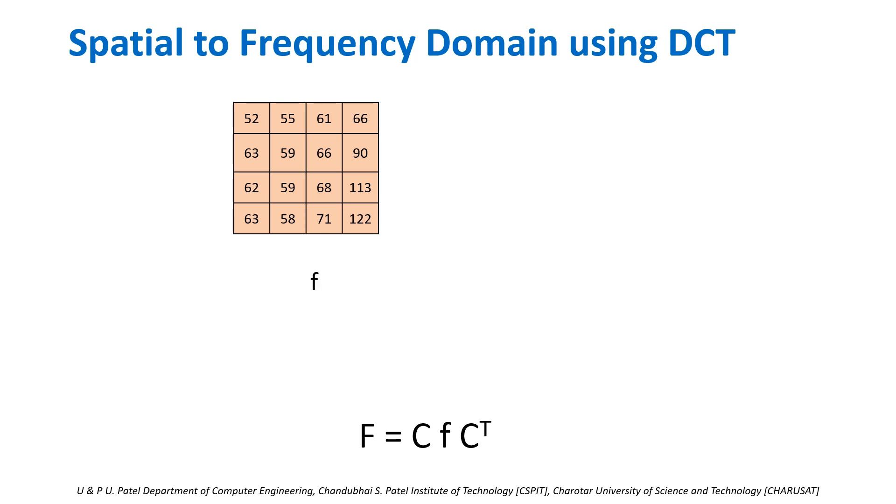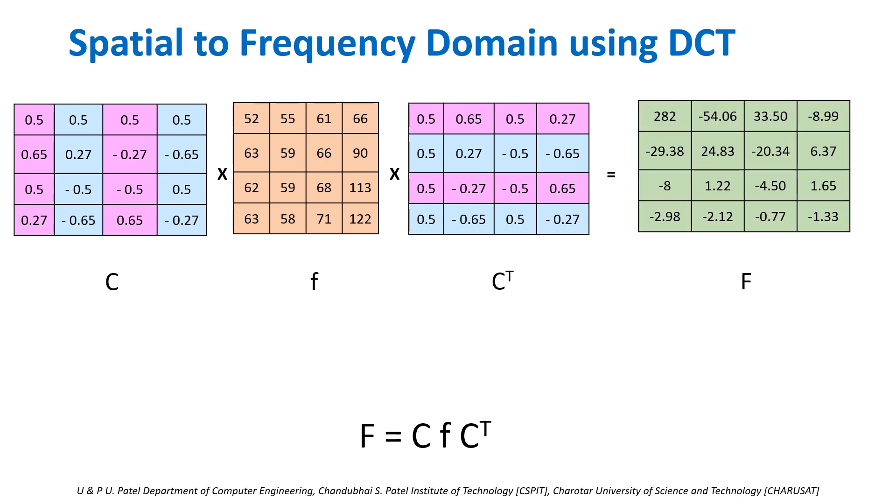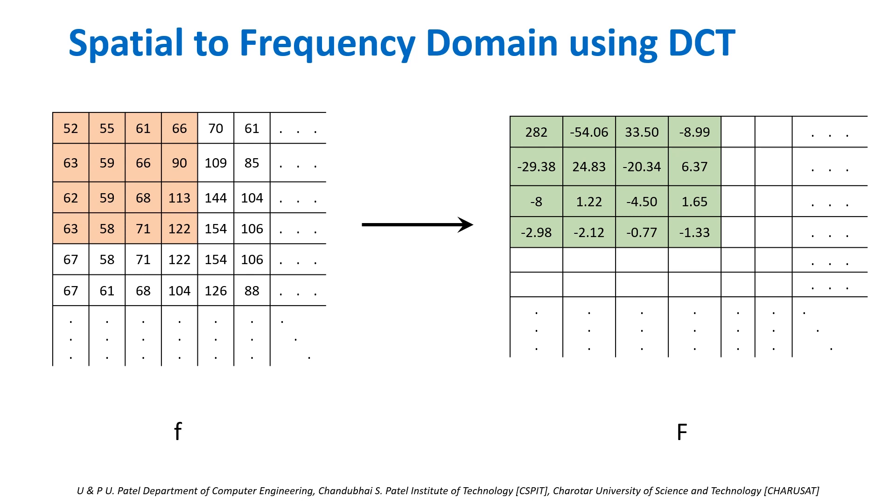This is our f. C we have already computed. We can compute C transpose by replacing rows with columns. Do the matrix multiplication of C, f, and C transpose. That will result in capital F. So, first 4×4 input image we have converted into frequency domain. Same method you can carry forward for the next 4×4 subimage and so on.